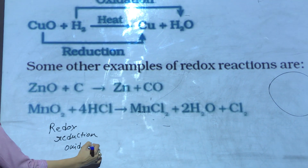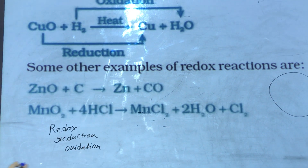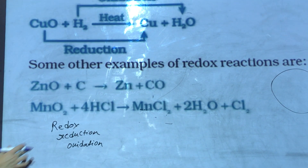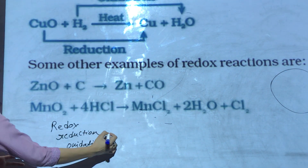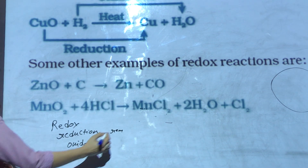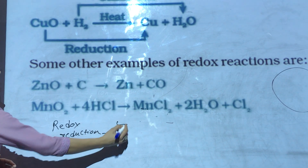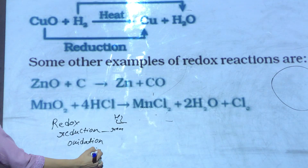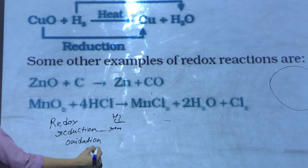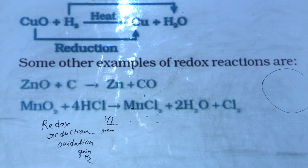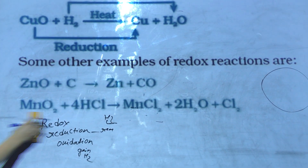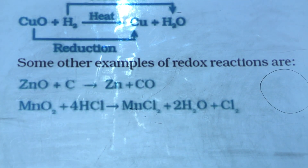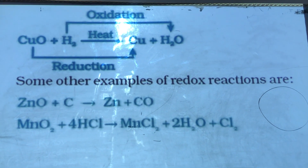So can you tell me what they are? Redox reaction is a reaction in which reduction and oxidation take place simultaneously. Reduction is the removal of oxygen and gain of hydrogen. Oxidation is gain of oxygen or removal of hydrogen. Now I just wanted to tell you one very important aspect of these oxidation and reduction reactions.